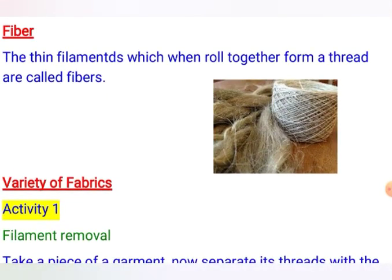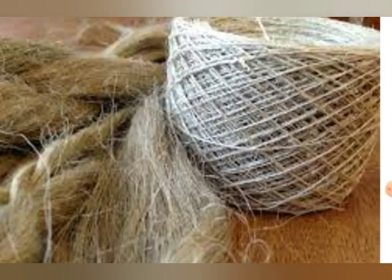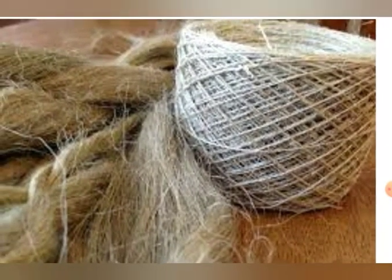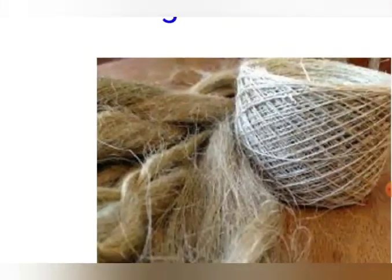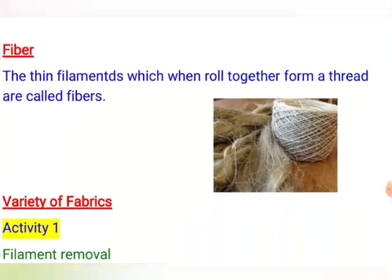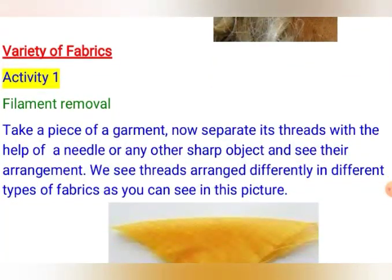What are fibers? The fibers are the thin filaments which when rolled together form a thread-like structure. Take a look at this picture — it is a thread made up of a plant fiber, and if you zoom in, you can see very fine filaments. These filaments are the fibers which together form thread.